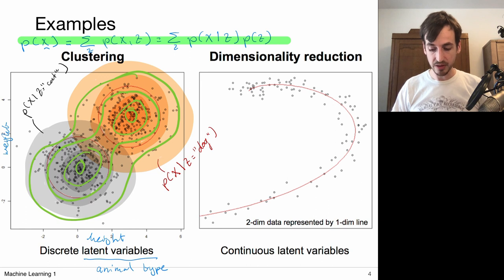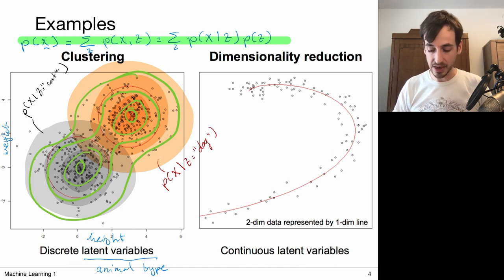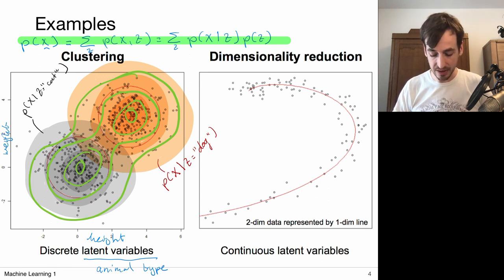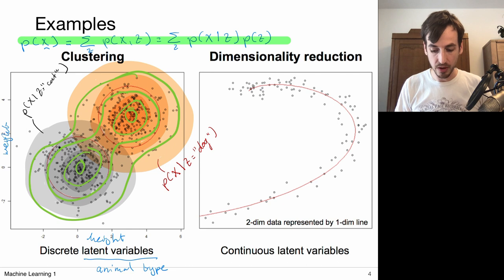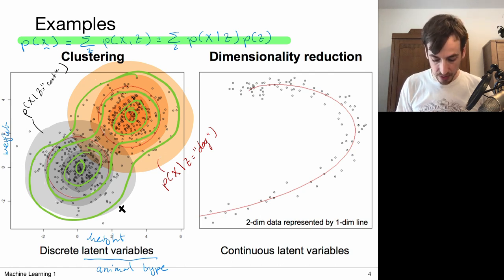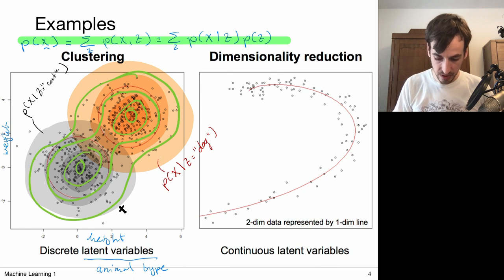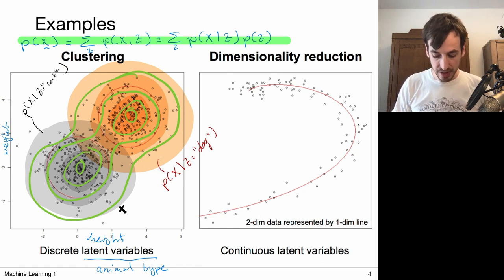So that's essentially the idea about unsupervised learning with latent variable models. We assume there is a latent variable that influences how my data is generated, and we use this to apply structure to my modeling approach and to my data. You could think of it as a clustering approach, because we group all these points together with one latent variable model and cluster the other points with another model.